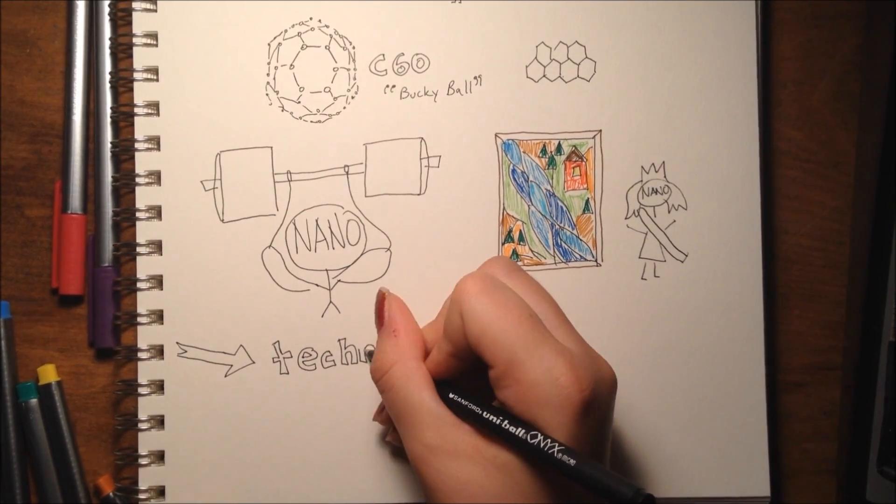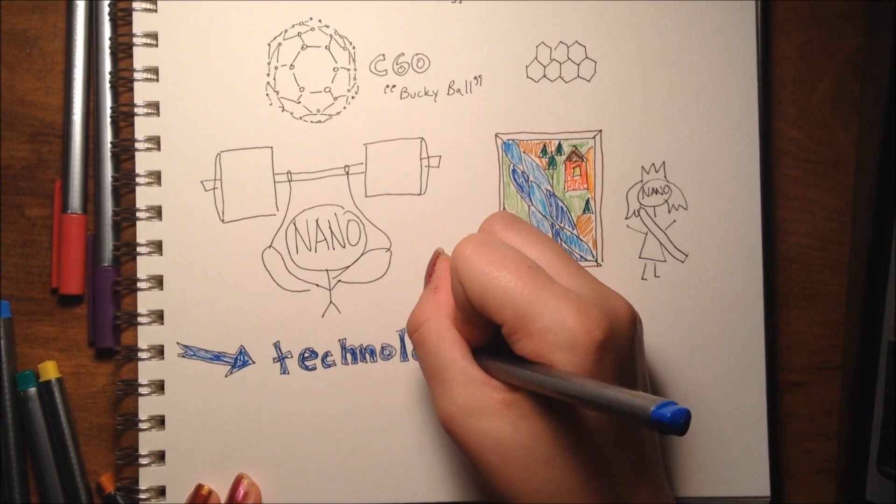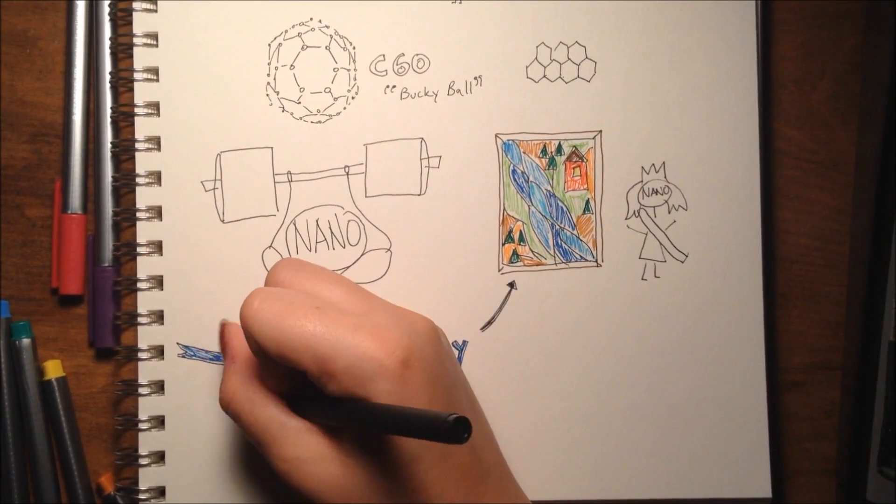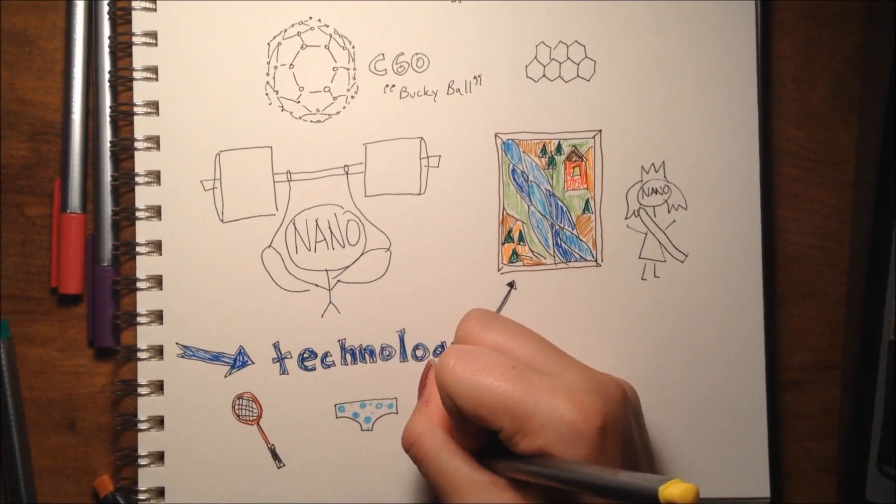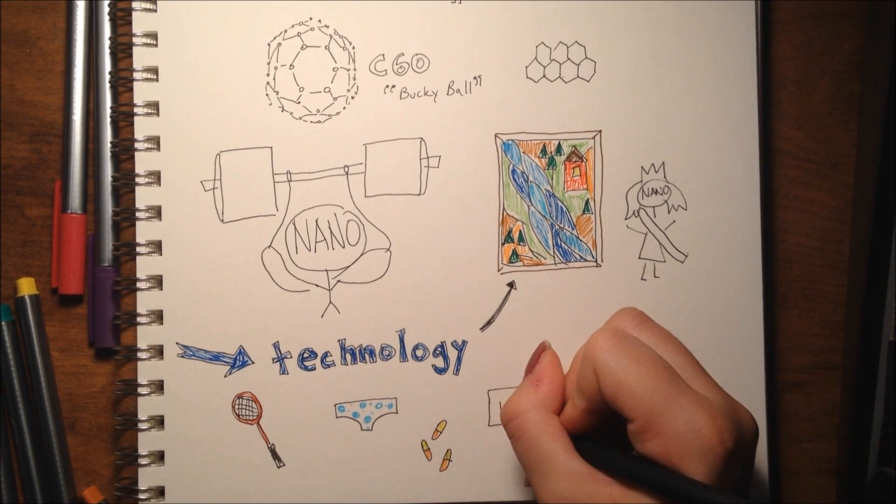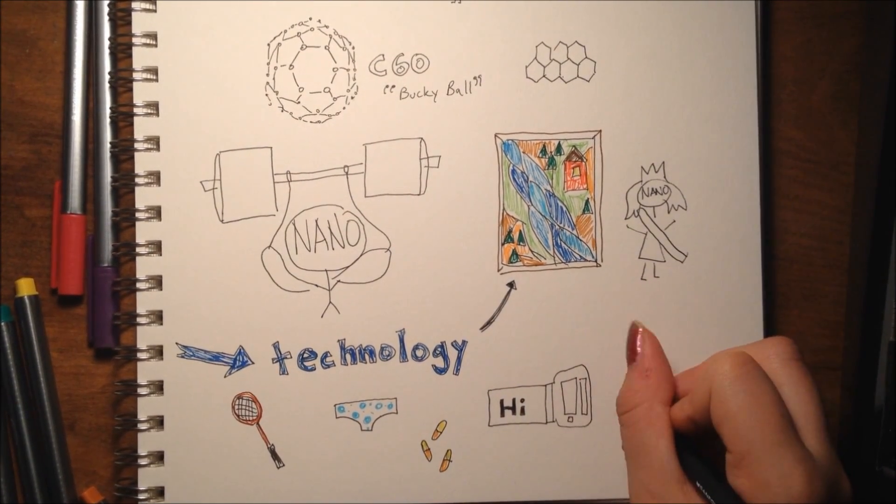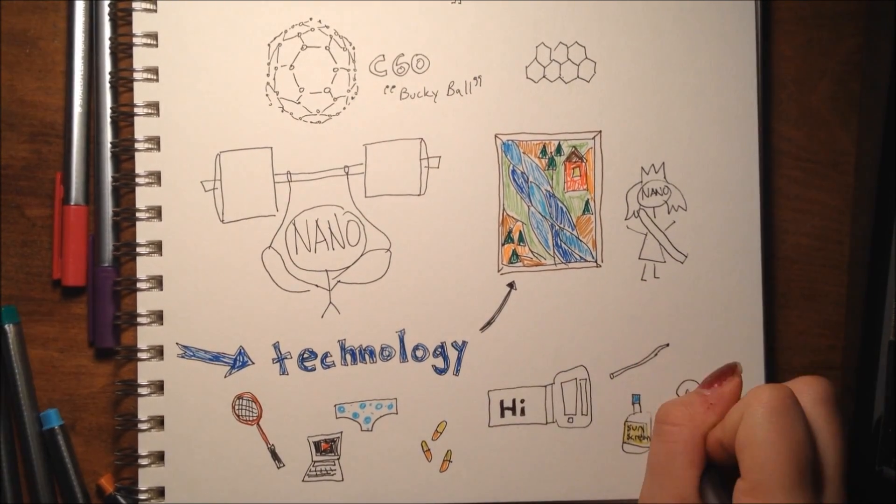These days, even though nano still seems really futuristic, there are actually lots of products on the market which make use of nanotechnology. Everything from stronger badminton rackets, underwear that doesn't smell, medication, printing processes, even sunscreen, and of course some electronic components like wires and computer parts.